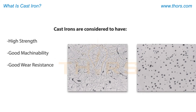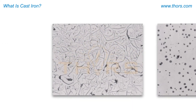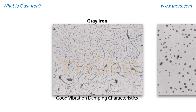Here is a microstructure of grey iron, a common type of cast iron at high magnification. These long thin flakes of graphite provide the metal with good vibration damping characteristics, because the matrix is not continuous and the vibrations do not travel all the way through.